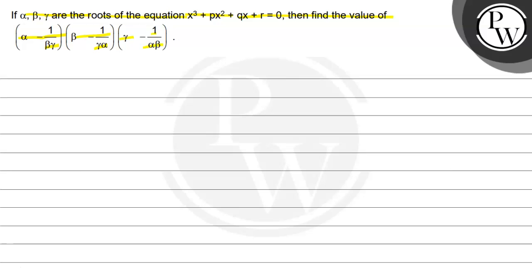Then the key concept we are going to use here is, if the equation or the polynomial is in the form of ax cube plus bx square plus cx plus d equal to 0 and x1, x2, x3 are the roots,